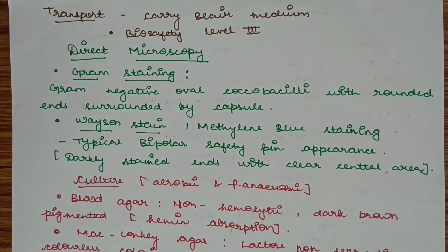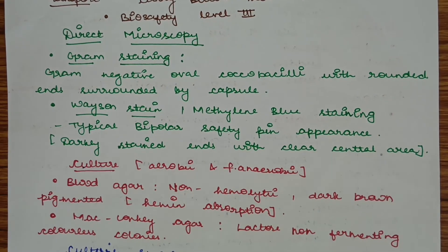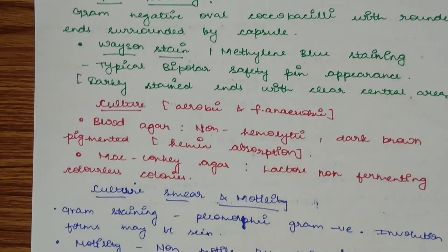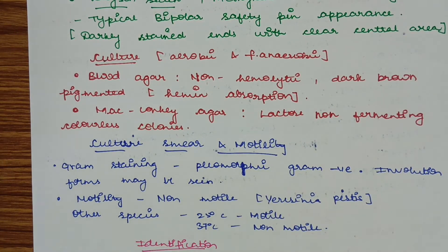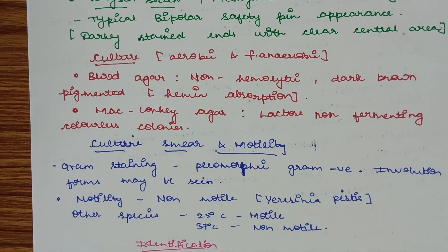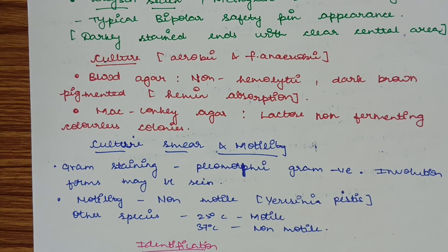In gram staining it is gram-negative oval coccobacilli. With Wayson stain or methylene blue staining, there is a typical bipolar safety pin appearance with darkly stained ends and a central clear area. In culture, the bacteria is aerobic or facultatively anaerobic and can be cultured on blood agar and MacConkey agar. On blood agar, non-hemolytic dark brown pigmented colonies are formed due to hemin absorption. On MacConkey agar, lactose non-fermenting colorless colonies are formed.